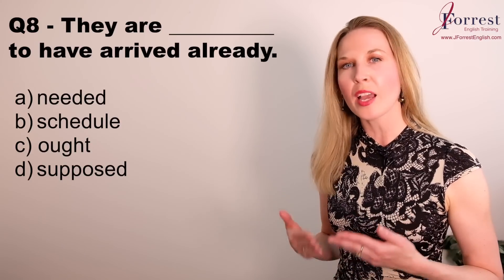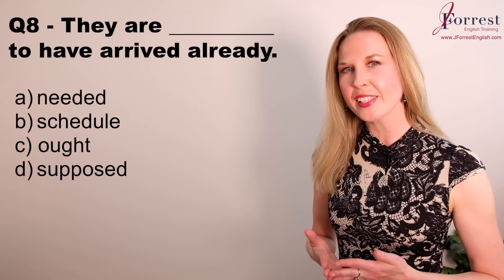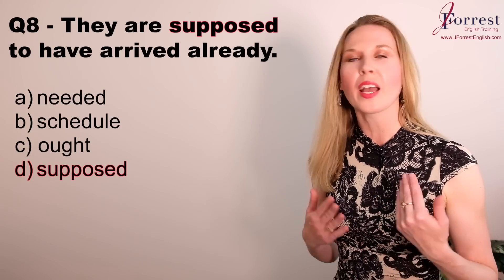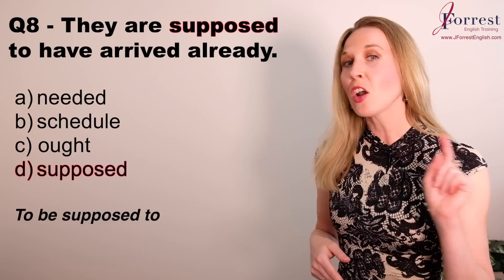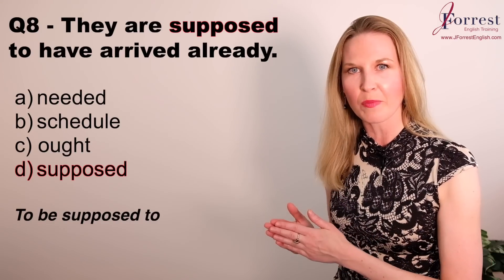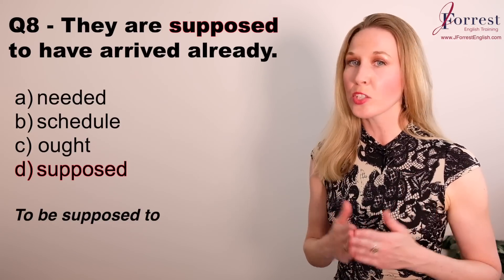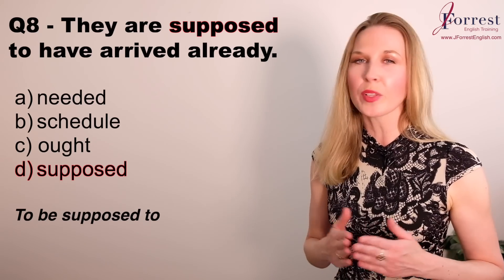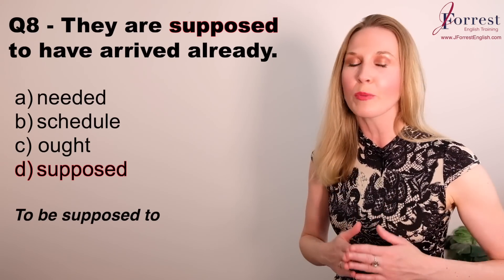Number eight: they are __ to have arrived already. The answer is 'supposed to.' The expression is 'to be supposed to' — they are supposed to have arrived already. Based on the sentence structure, the only possible choice is 'supposed to.' A lot of students make mistakes with this expression — I made a lesson on this topic and I'll leave the link in the description below.